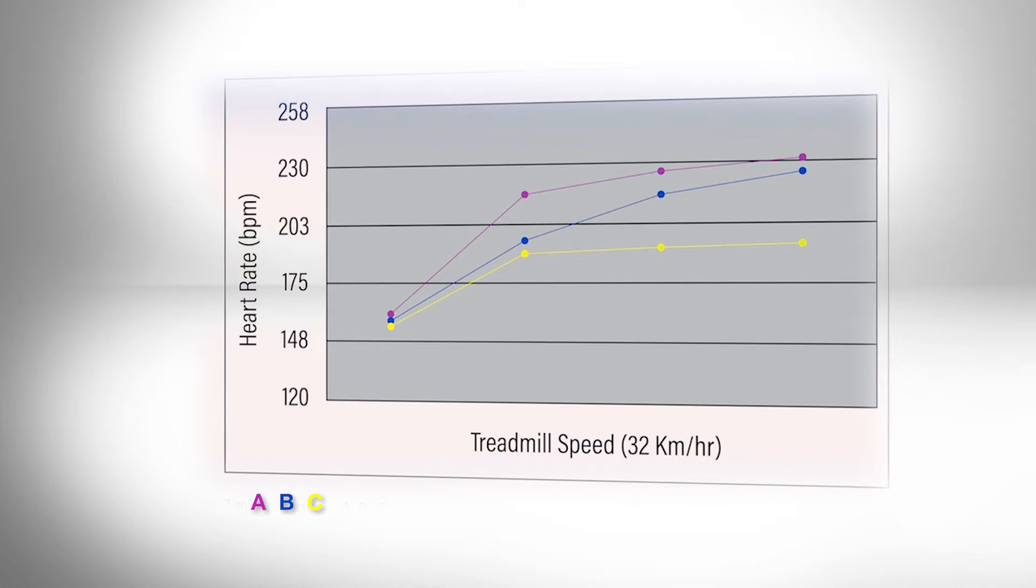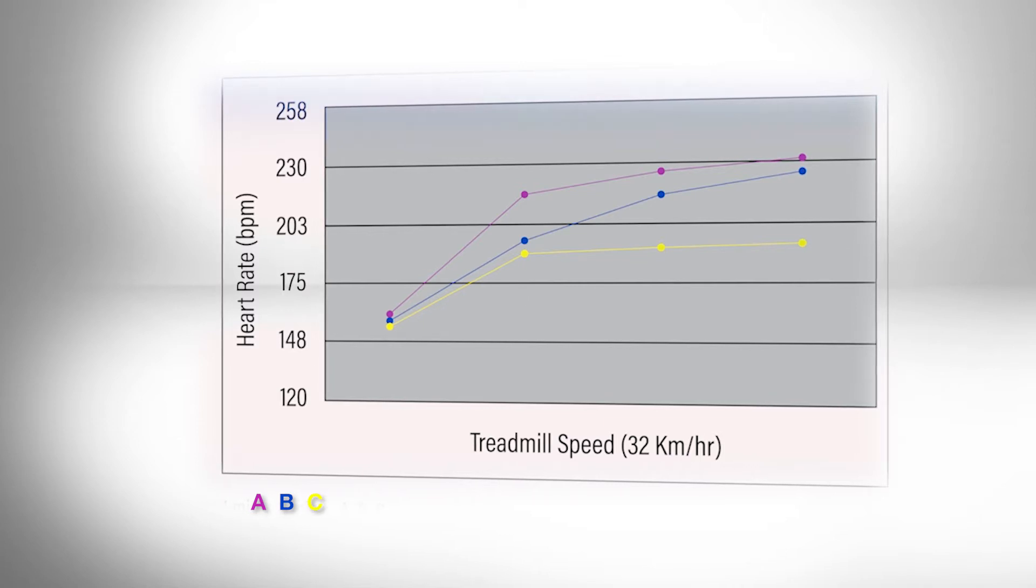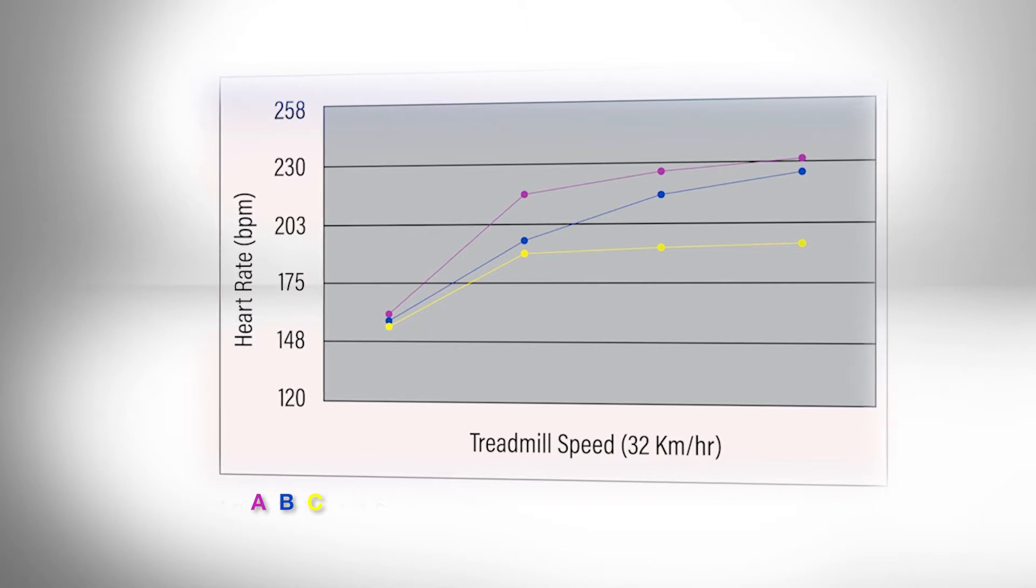If you look at the graph, it's illustrating the presence of cardiovascular drift during the three-minute gallops on the treadmill. A and B represent different levels of drift, with C representing the normal response.